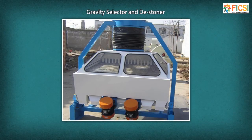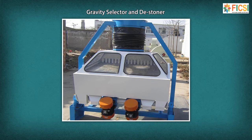Gravity Selector and De-stoner: This machine is used for cleaning a wide variety of products such as wheat, maize, rice, nuts and pulses. The machine not only gives a de-stoning separation, but also provides a separation of heavy and light product streams.